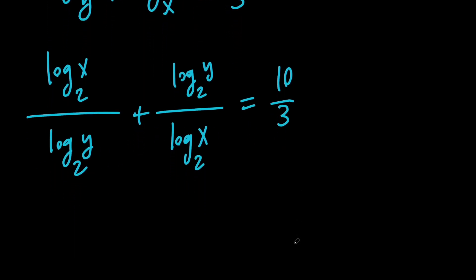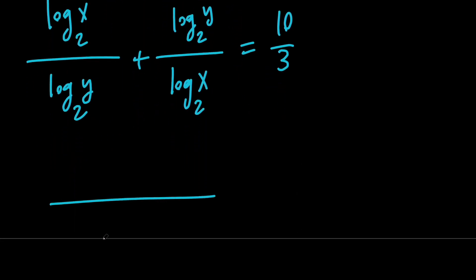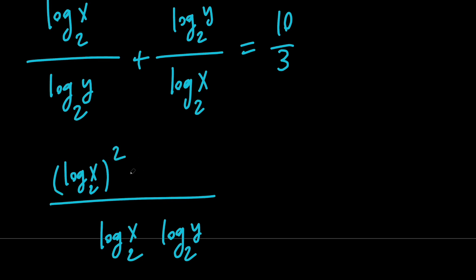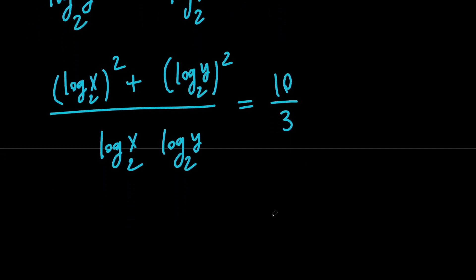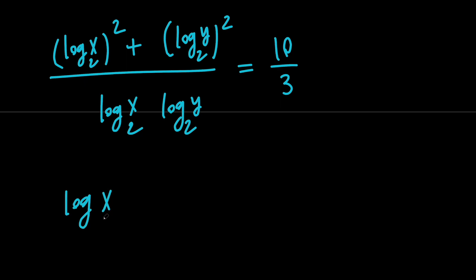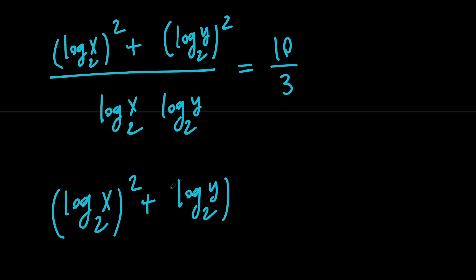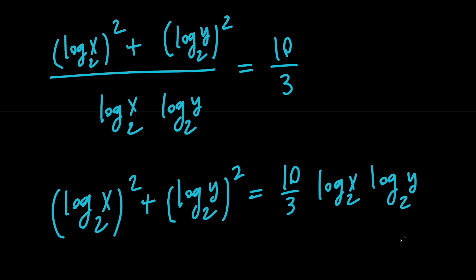Next, let's go ahead and get a common denominator on the left hand side. So we're going to have the product of log x and log y in the denominator, and on the top we're going to have log x with base 2 squared plus log y with base 2 squared. From this I can say that log x with base 2 squared plus log y with base 2 squared equals 10 thirds times the product of log x and log y.